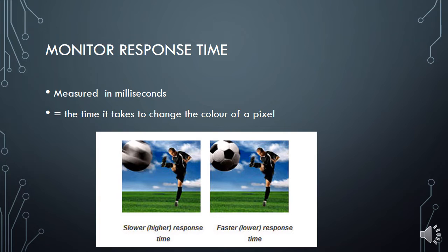Monitor response time is how long it takes to change the color of a single pixel on the screen, and it is measured in milliseconds. If you have a slow response time, especially when watching sports or playing games, the moving object will look blurred. A faster response time — meaning a smaller number of milliseconds — means you get a clear picture all the time, even as the picture is changing in a game or sports.